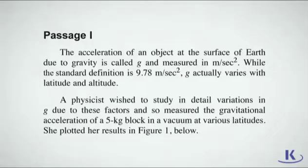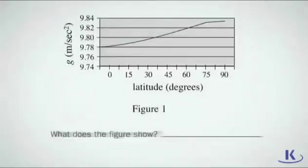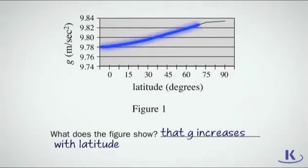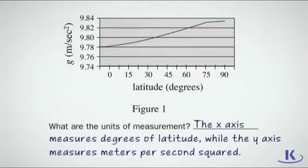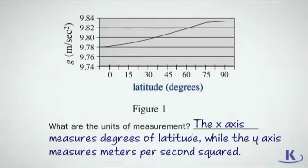OK, now take a closer look at Figure 1. What does Figure 1 show? It shows that g increases with latitude. What are the units of measurement? The x-axis measures degrees of latitude, while the y-axis measures meters per second squared.